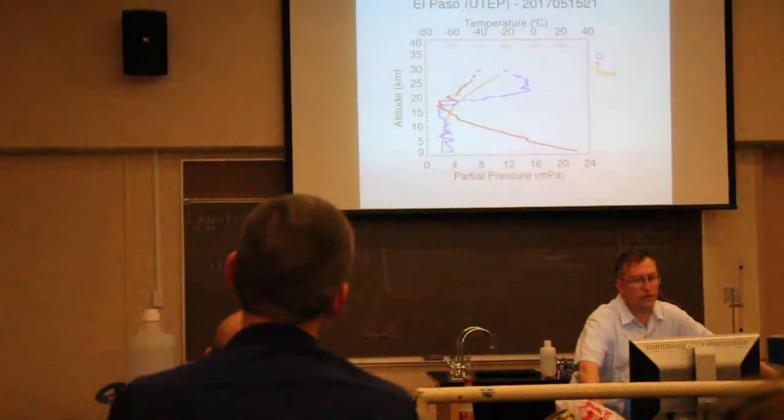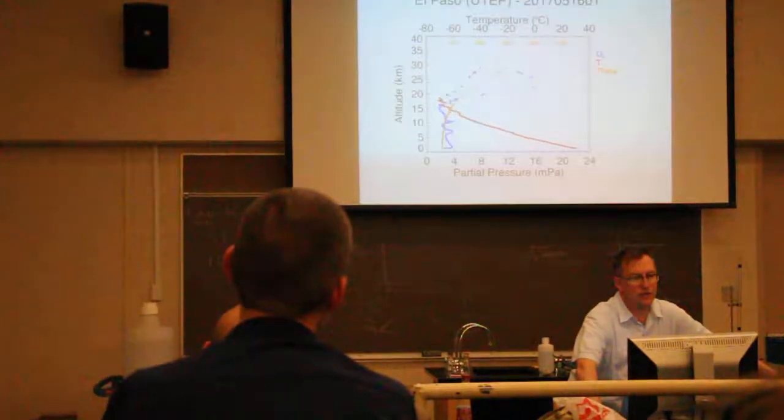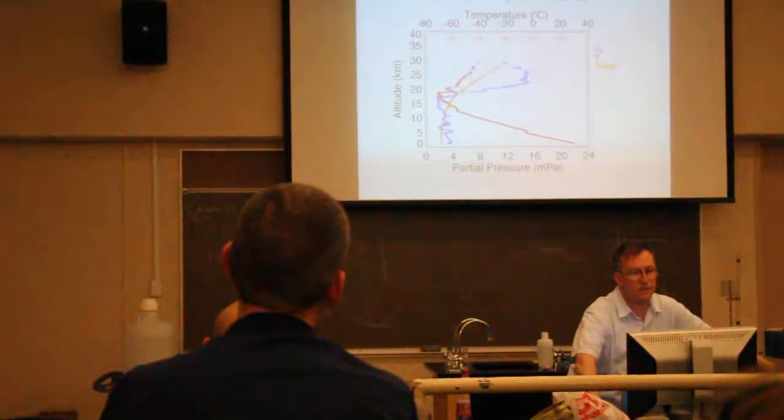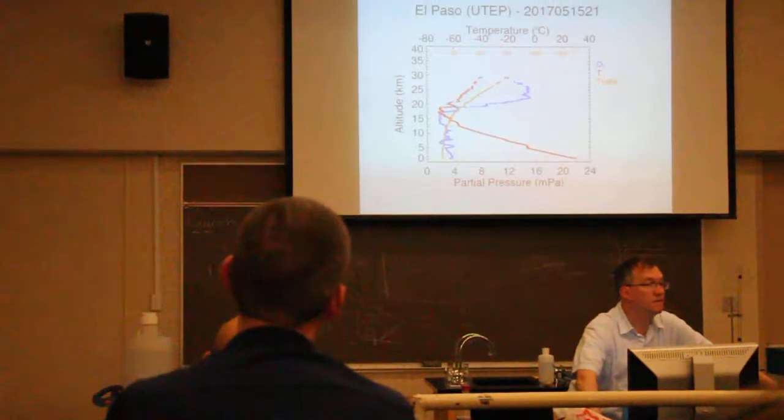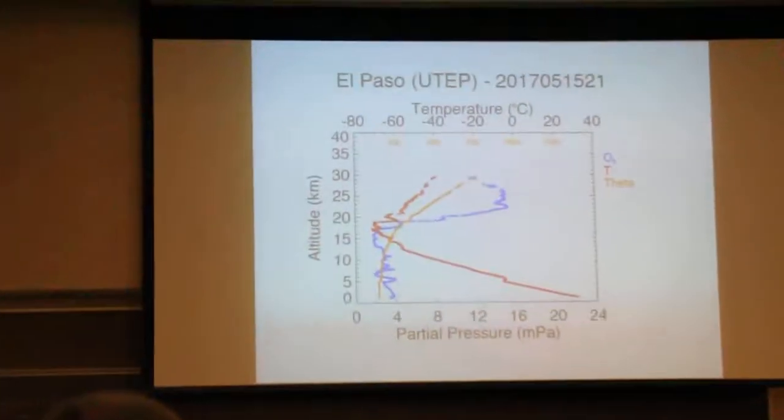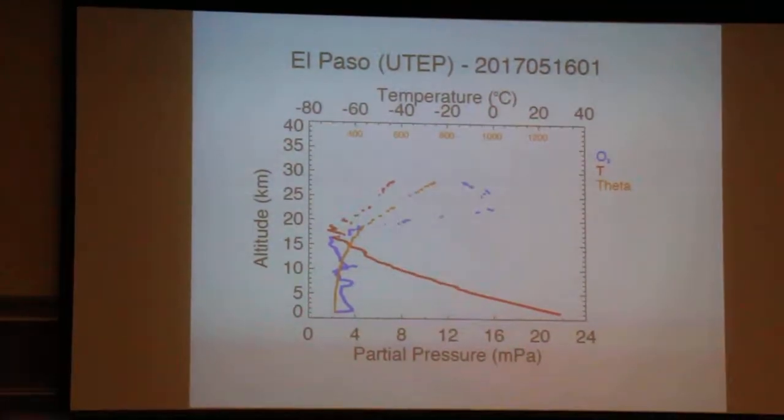What's going on down at the surface? We get higher temperature. We've got a strong gradient ozone right at the surface. That's interesting. That wasn't there in the afternoon profile.